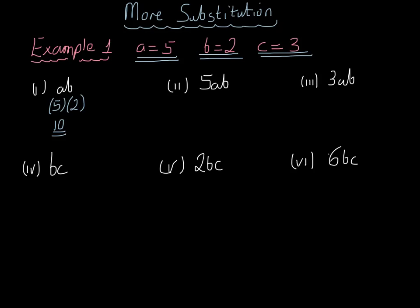5ab. Well, that must be 5 in brackets. A is 5, so put another 5 in brackets, and b is equal to 2. 5 times 5 is 25, times 2 is 50. Does that make sense? Well yes, in part 1, if 1 ab is 10, then 5 lots of ab are 5 times 10 is 50.